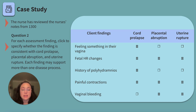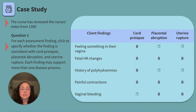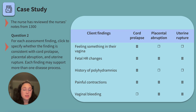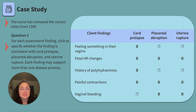Vaginal bleeding — our client didn't report this, but it would potentially be found with placental abruption and uterine rupture. Looks like we have a likely condition: cord prolapse. Hope you have your running shoes on and are ready to act quickly.